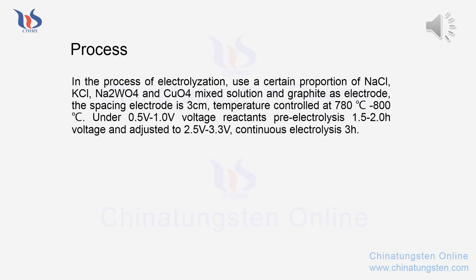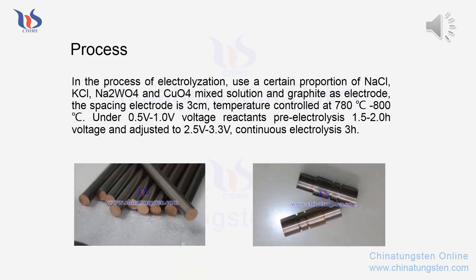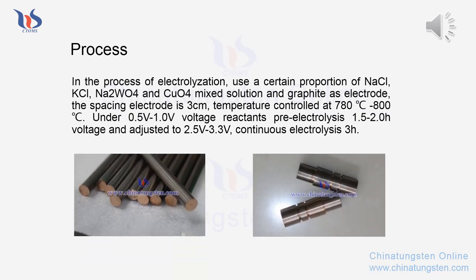In the process of electrolytization, a certain proportion of NaCl, KCl, Na2WO4, and CuSO4 mixed solution is used along with graphite as the electrode. The electrode spacing is 3 cm. Temperature is controlled at 780 to 800 degrees. Under 0.5–1.0 V voltage, reactants undergo electrolysis for 1.5–2.0 hours, then voltage is adjusted to 2.5–3.3 V for continuous electrolysis for 3 hours.